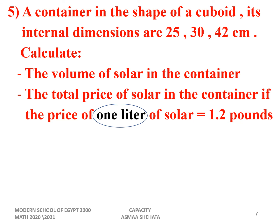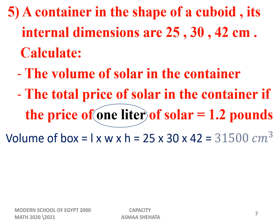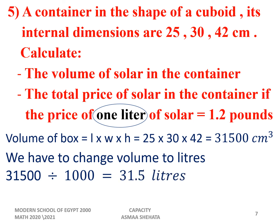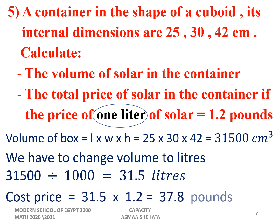The volume of the cuboid equals length × width × height = 25 × 30 × 42 = 31,500 centimeter cube. Write the unit. The price is given per liter, so convert centimeter cube to liters by dividing by 1000. 31,500 ÷ 1000 = 31.5 liters. Finally, to get the price: 31.5 × 1.2 = 37.8 pounds.